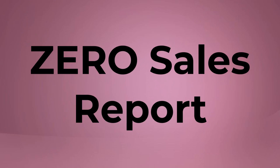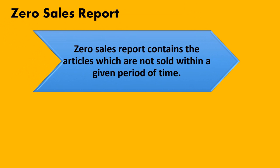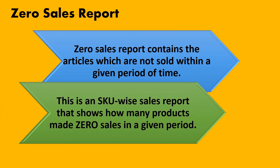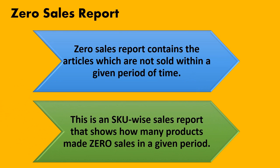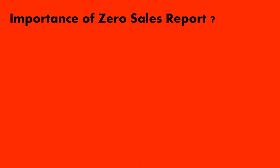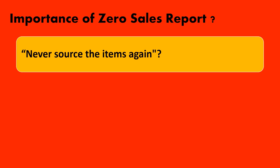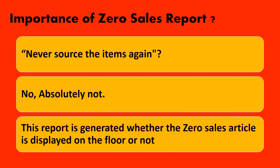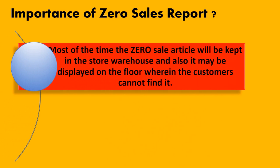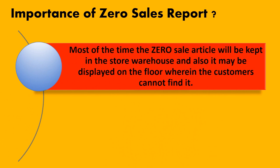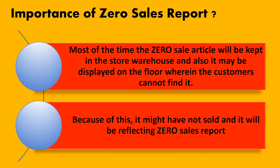The fourth report is the zero sales report. As the name suggests, it contains all articles which have not been sold within a given period of time — it is an SKU-level sales report showing how many products recorded zero sales. This report is not generated to stop sourcing those items; rather, it is generated to check whether the zero-sales article is displayed on the floor. Most of the time, the article may be kept in the warehouse or placed on the floor where customers cannot find it, which is why it has not sold.